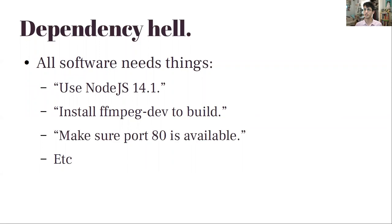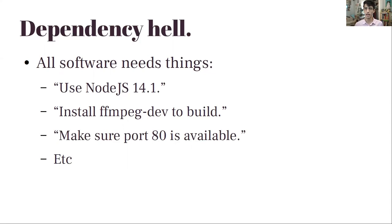So there's this phrase called dependency hell. Fundamentally, all software needs things. You'll see descriptions if you go to an open source project that might say something like use Node.js version 14, or you need FFmpeg dev to build, or you need to make sure that port 80 is open because the software is going to listen on port 80. All software needs something - at the very minimum, software needs a certain computer architecture. I think everyone's had the experience where you've tried to install software and some package is missing, and then you try to find instructions online but they're for an old version. You spend two or three hours trying to fix that.